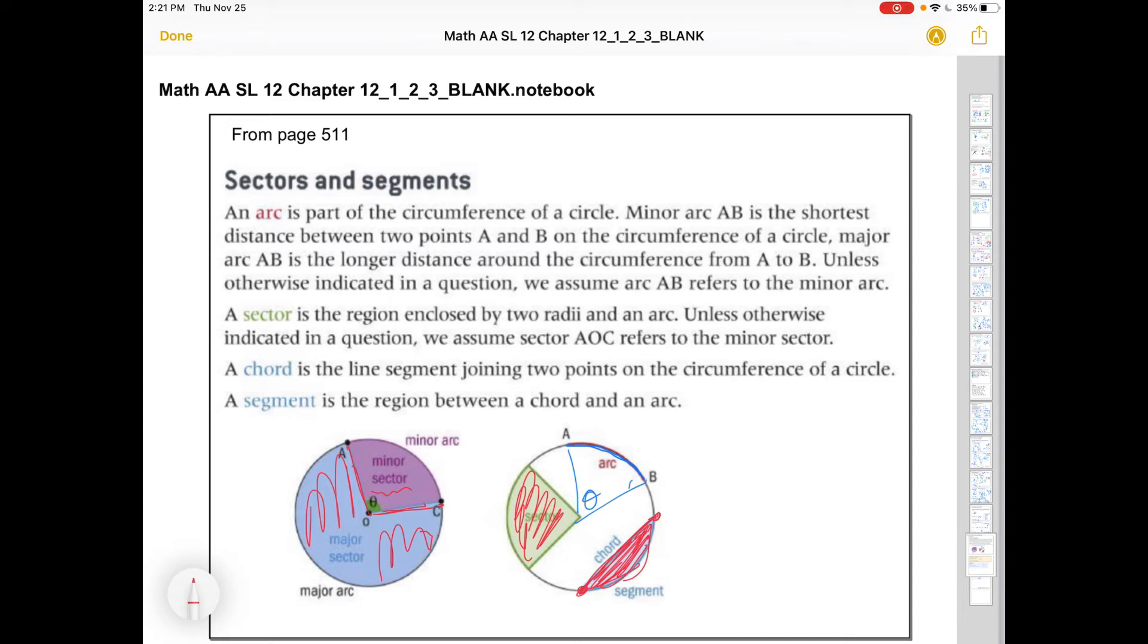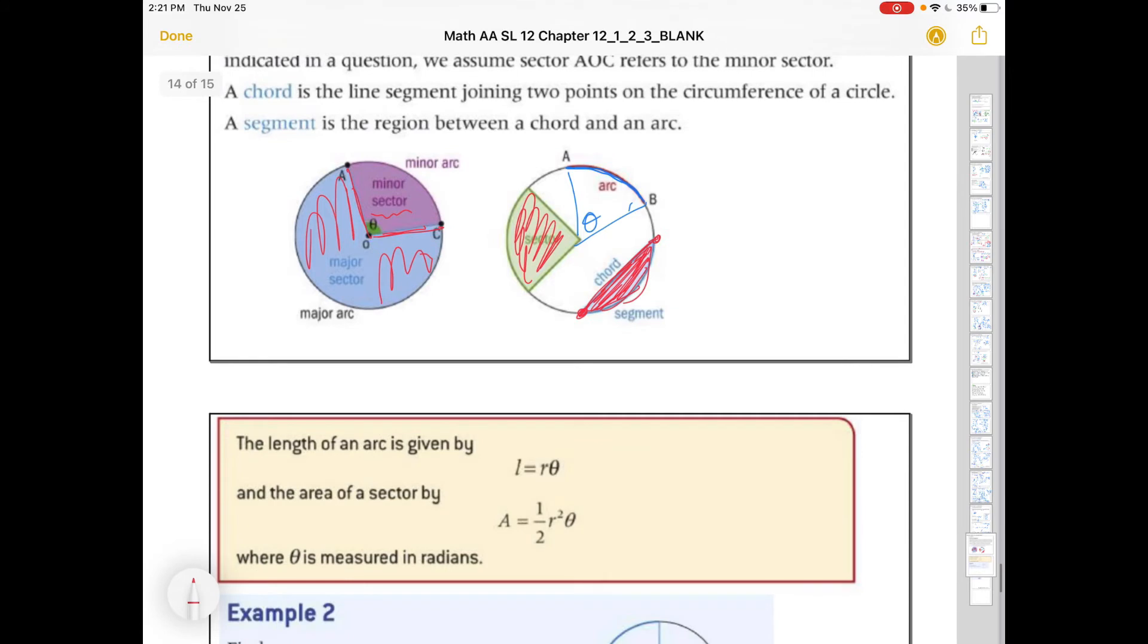We developed some formulas for these areas and lengths last year in degrees. They're actually a lot nicer in radians. The length of an arc is given by r times theta, or theta r. The area of any sector is given by one half r squared theta. That is true if theta is in radians. Those two formulas are in your formula booklets, so let's put them to use.